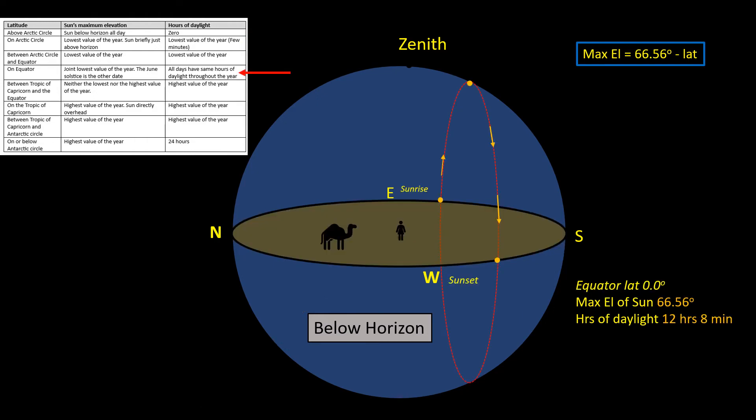On the equator, the December solstice is one of the two days in the year when the sun reaches lowest maximum elevation in the sky, 66.56 degrees. The other day is the June solstice. The sun actually reaches its highest elevation in the two equinoxes in March and September, where it's directly overhead at the zenith.